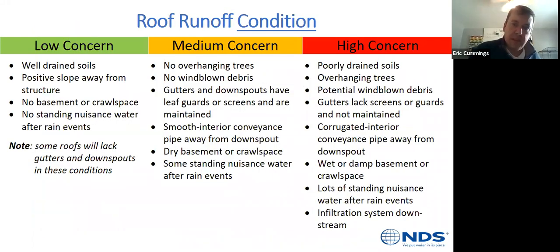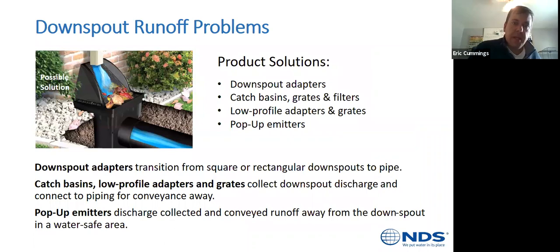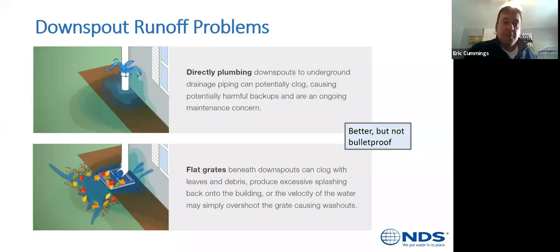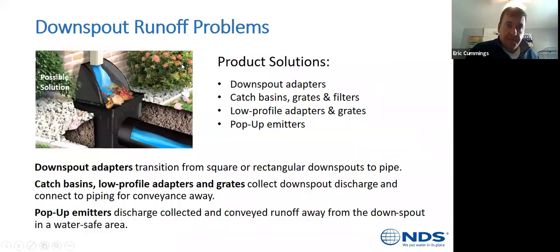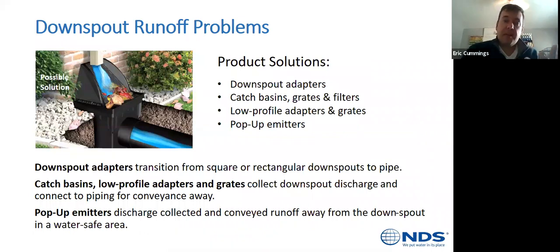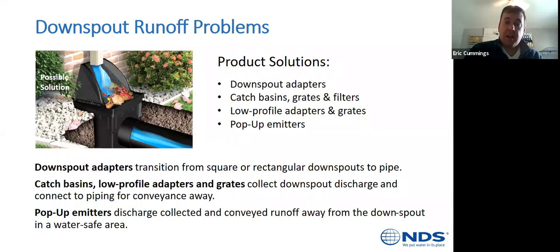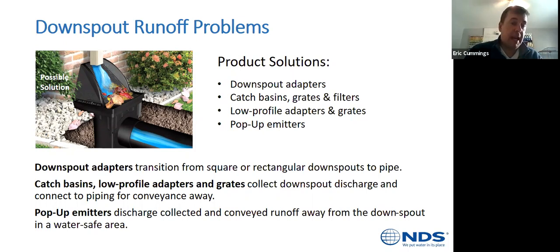Our solutions for downspout runoff are downspout adapters, catch basins, grates and filters, low profile adapters and grates, and pop-up emitters. Adapters transition from a square or rectangular downspout to a pipe. Catch basins, low profile adapters, and grates collect downspout discharge and connect piping to allow for conveyance away. Pop-up emitters are where everything runs to at the end of the system.